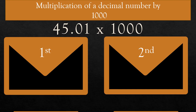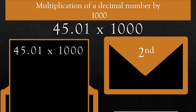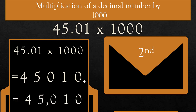For example, 45.01 × 1000. There are two ways to solve this question. First way: if we multiply 45.01 × 1000, the decimal point shifts three places to the right. But in 45.01, there are only two digits after the decimal. So we will put a zero and then a decimal. Count three digits from the right — 1, 2, 3 — and place a decimal. So the answer is 45,010.